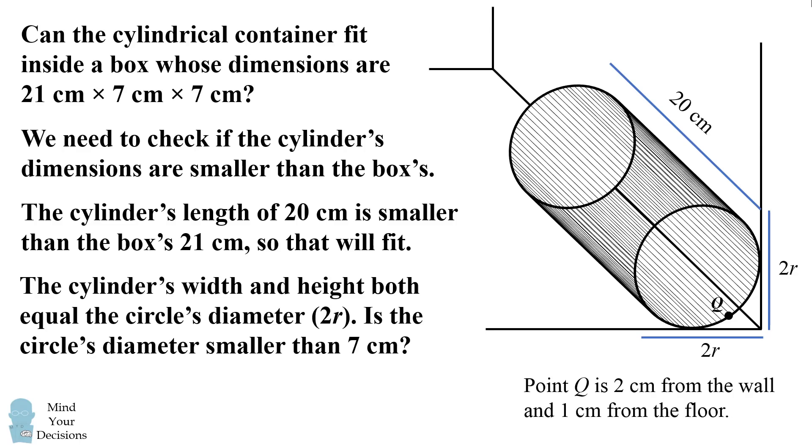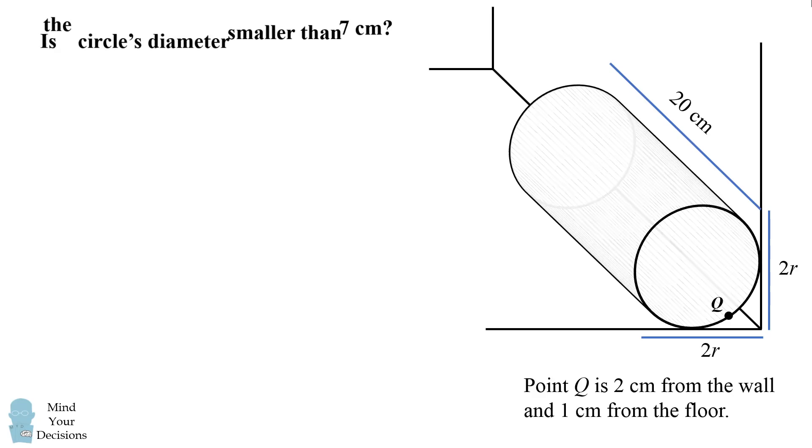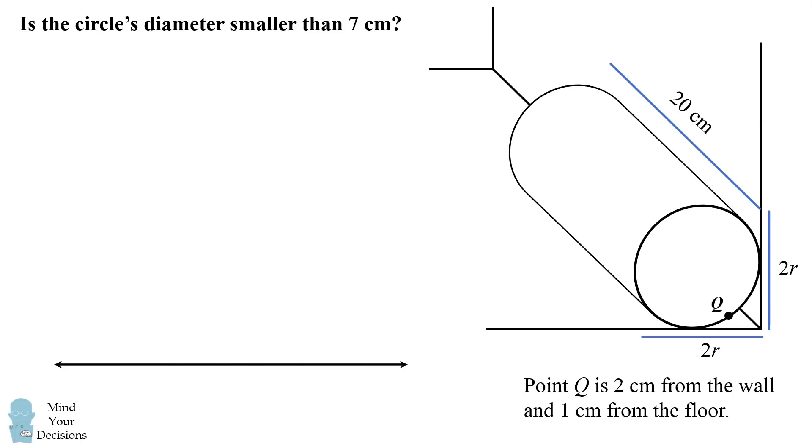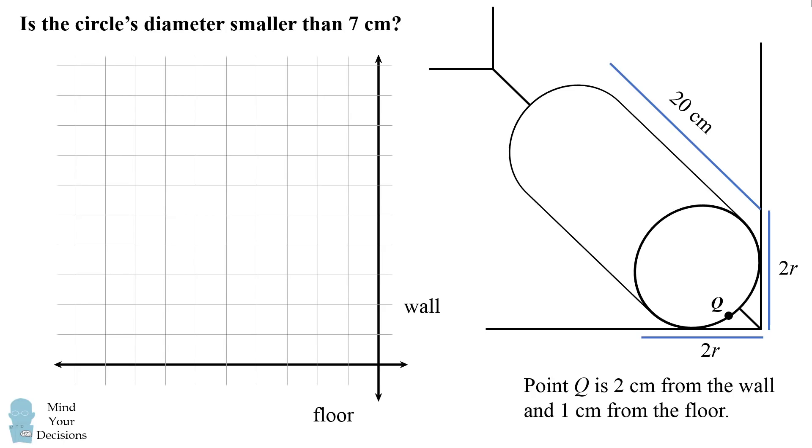The only piece of information we're given is that q is 2 cm from the wall and 1 cm from the floor. So we can try and numerically estimate what the circle's dimensions need to be. We'll plot out the floor on the x-axis and the wall on the y-axis. We'll use a little bit of graph paper, and we'll draw a diagram that's to scale so that we can make a numerical estimate. Point q is 2 units from the wall and 1 unit from the floor. So we'll mark this point as (-2, 1) because it's 2 units left of the wall and 1 unit above the floor.